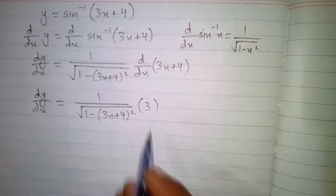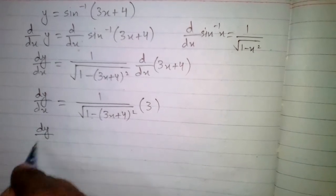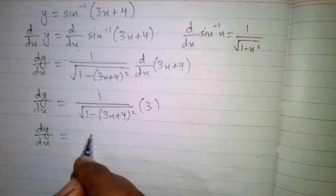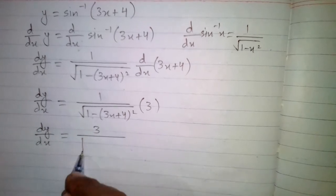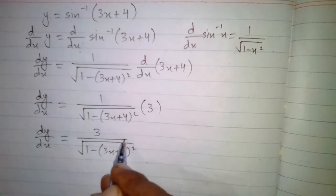So we have 3 over here, this 3 will be multiplied. We have dy by dx is equal to 3 upon square root of 1 minus 3x plus 4 whole square.